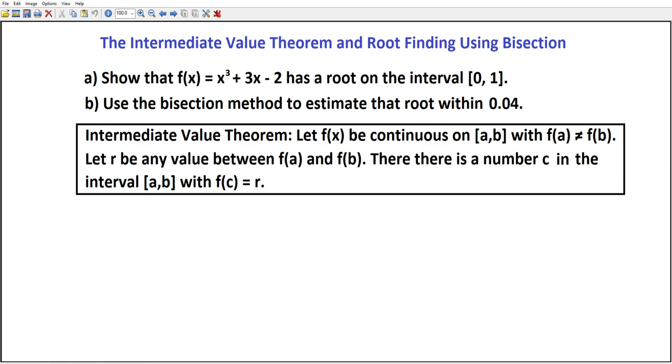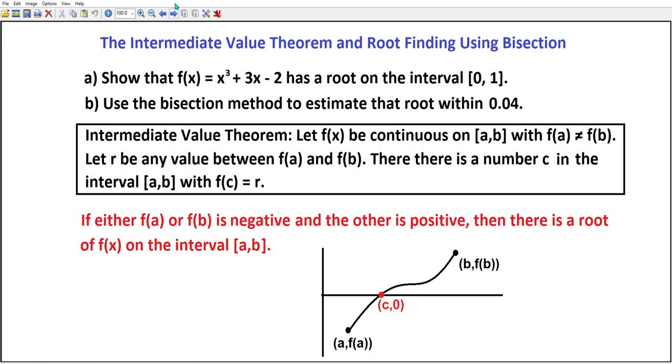Now what's important about that for this particular exercise is that if either f(a) or f(b) is negative and the other is positive, then zero is between every positive and negative number, so there is a root of f(x) on the interval [a,b] as pictured in the diagram. So that's what we're going to do.